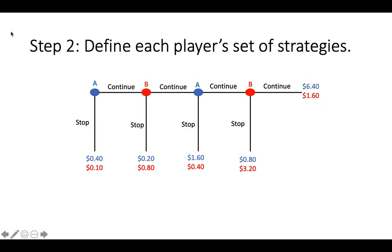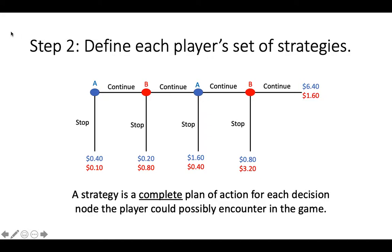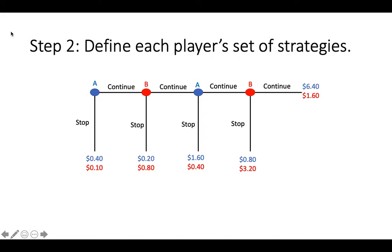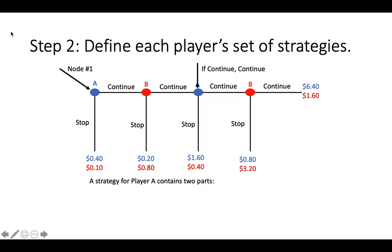To solve the game, the first thing we need to do is define each player's strategy set. Remember that a strategy is a complete plan of action for each decision node that the player could possibly encounter in the game, including those nodes that they may never get to play because of something that they do or something that their opponent does earlier in the game. To define each player's strategy, we will start by counting how many decision nodes each player has. Player A has two decision nodes: the first node in the game and the node that occurs if both players choose to continue on their first move. Therefore, a strategy or a complete plan of action for Player A must contain two parts: what to do at node 1 and what to do if both players choose continue on their first move.